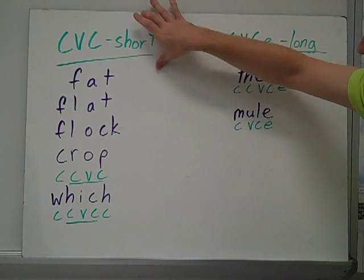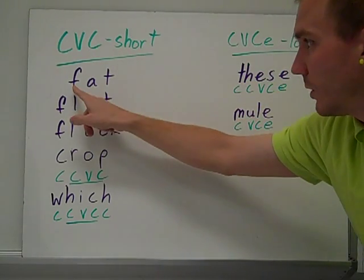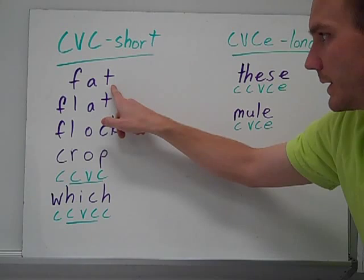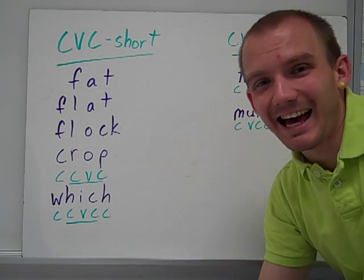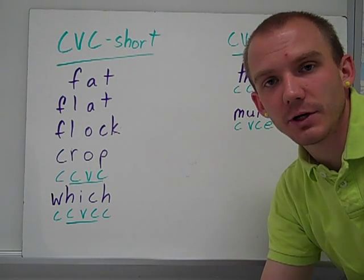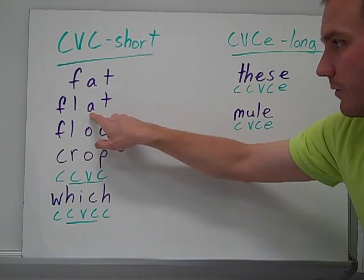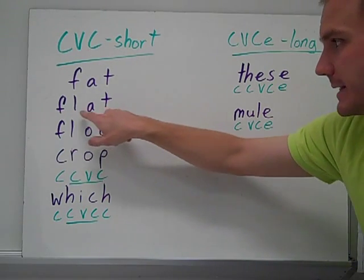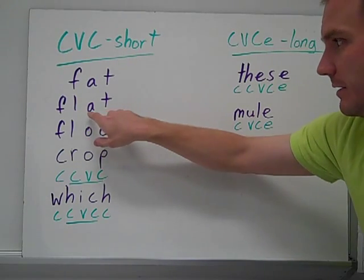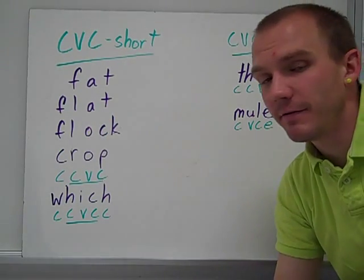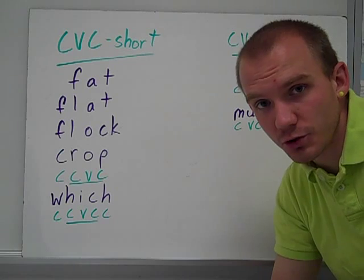What do I mean by CVC? Well, let's look at the word fat. You have a consonant, a vowel, and a consonant, and it creates f-a-t. It creates a short a sound, or flat. You find the vowel. On both sides, it has a consonant. So it's CVC. So it's flat, with a short a.